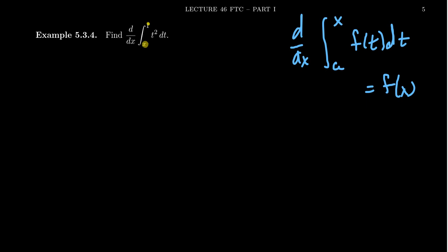the limits are in the wrong locations right here. With FTC1, you want a constant on the bottom and you need a variable on the top, as you can see there. But with this setting, we have the variable on the bottom and the constant on the top.